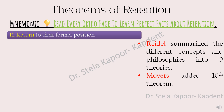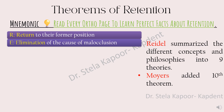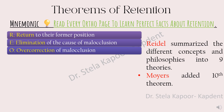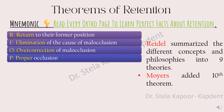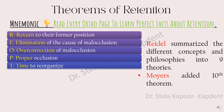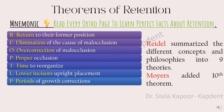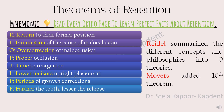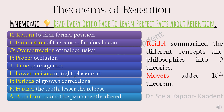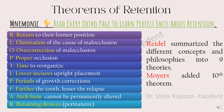R stands for Return — return to their former position. E stands for Elimination of the cause of malocclusion. O stands for Overcorrection of the malocclusion. P stands for Proper occlusion. T is for Time to reorganize, i.e., reorganization of bone and surrounding structures. N stands for lower incisors, i.e., upright placement. P is for Periods of growth correction. F is that Farther the tooth, lesser the relapse. A stands for Arch form that cannot be permanently altered. R stands for Retaining devices which, according to Moyers, should be permanent in nature.